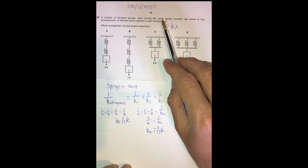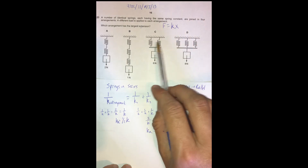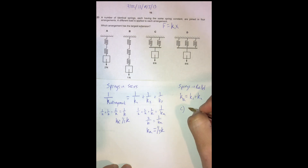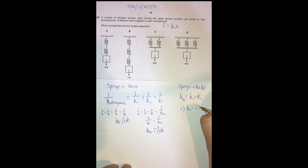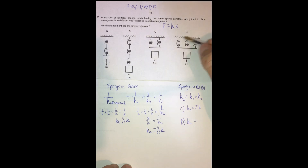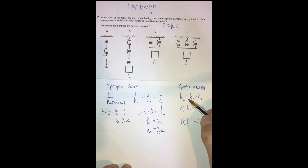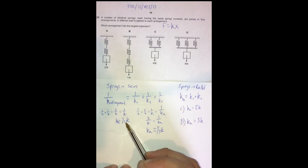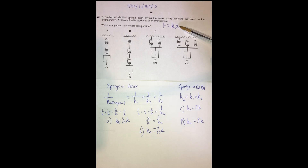Since all springs have the same spring constant, for choice C we get k_arrangement = 2k, and for choice D — three springs in parallel — k_arrangement = k + k + k = 3k. Now we know the arrangement spring constants for all four choices. Using Hooke's law and the force values, we can calculate the extension for each one and choose the largest.